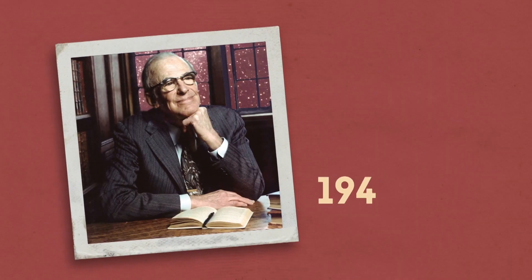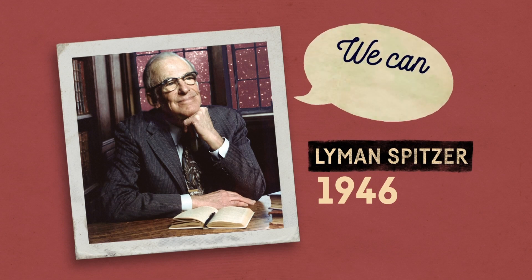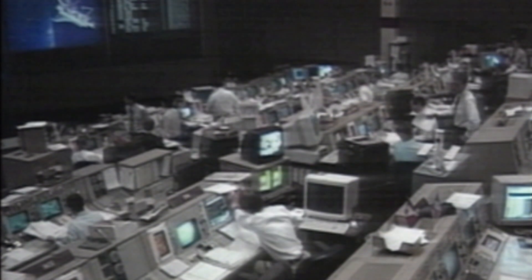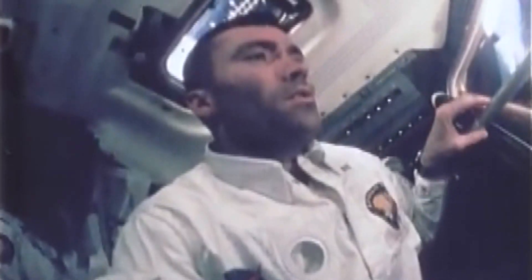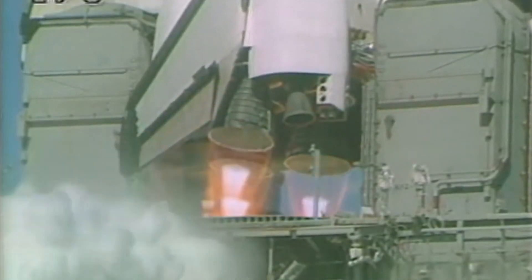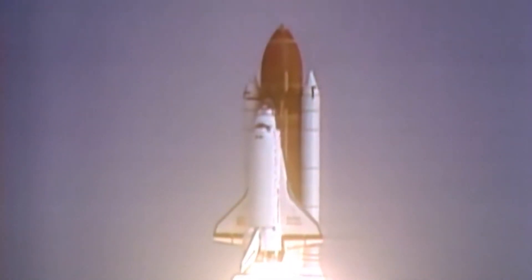But back in 1946, a guy named Lyman Spitzer thought we could do better than mountains. He wanted to go above the atmosphere. Of course, that wasn't a simple task, and it took decades of research and trials and space triumphs and space disasters, before finally, on April 24, 1990, the Hubble was sent into space.